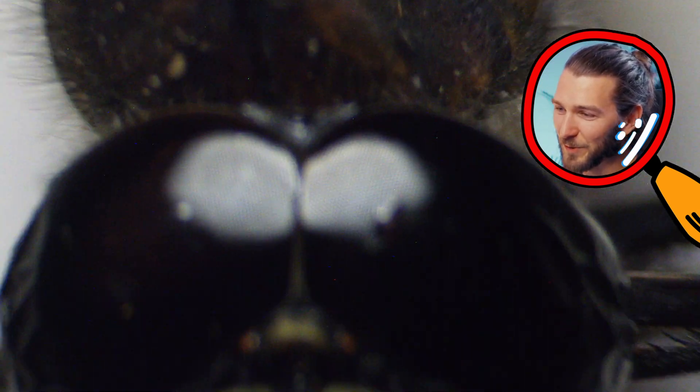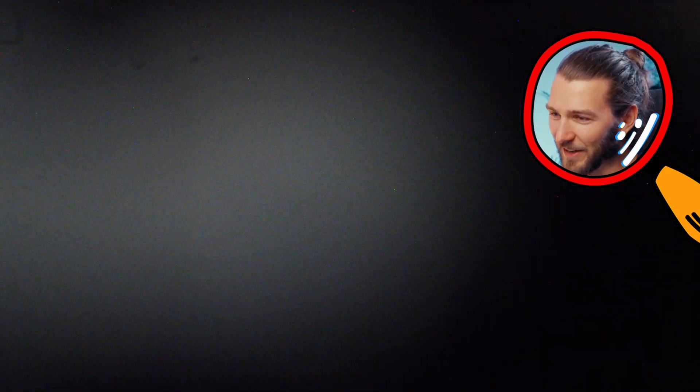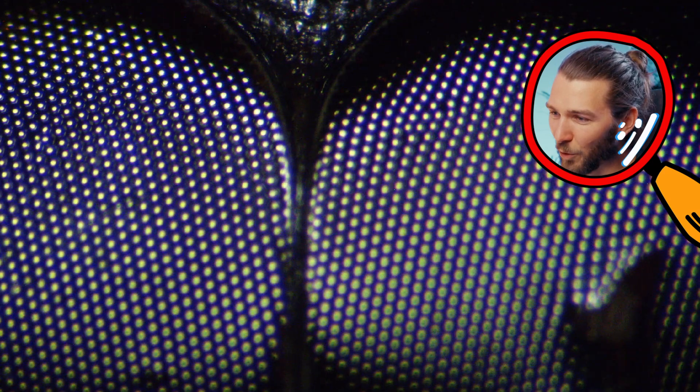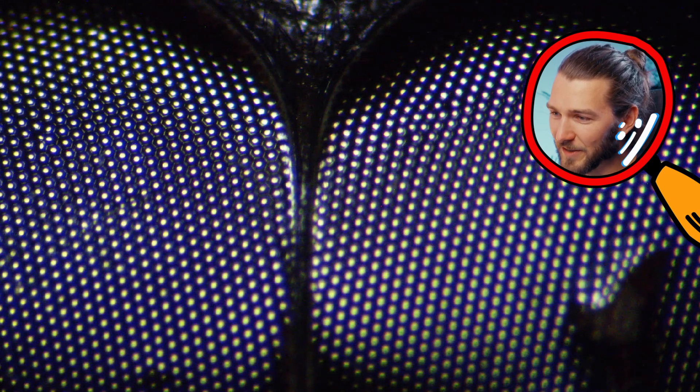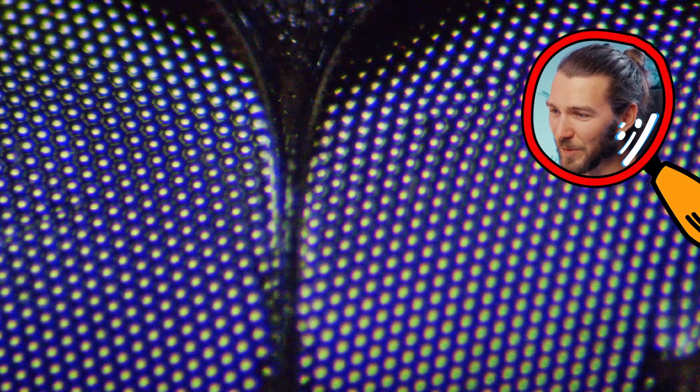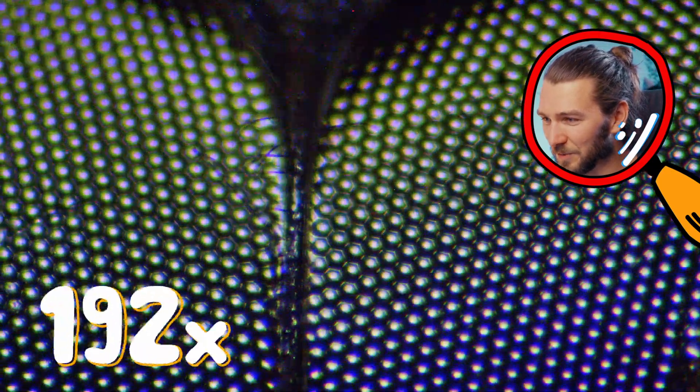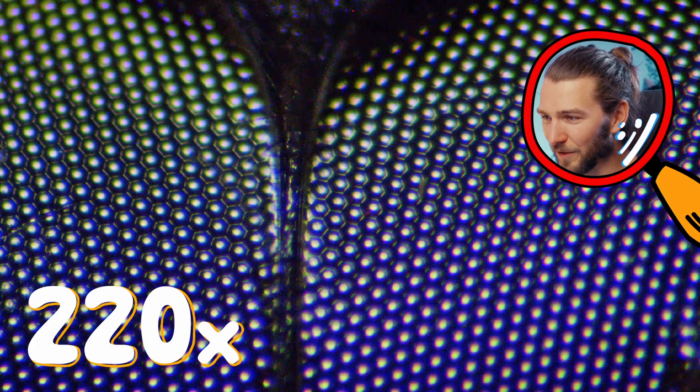I'm going to zoom up here to his eyes. And now you can see here, this is a cross section between the two eyes. Let me zoom in a bit more to 220 times magnification. You can see here all the small hexagons.